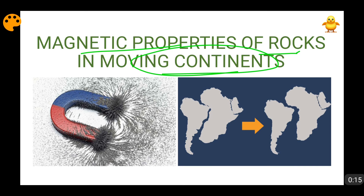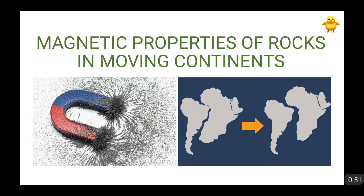Continental drift theory was given by Alfred Wegener in 1912, and he gave a lot of proofs on the basis of which he said that the continents are moving. The exact reason why continents were moving was being deciphered because of the seafloor spreading theory and the plate tectonics theory. How magnetic properties were used to show the continents are moving was being deciphered in 1950. This is the topic of this video.